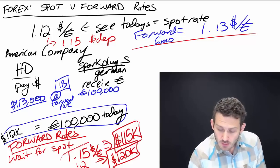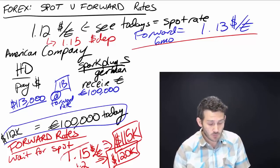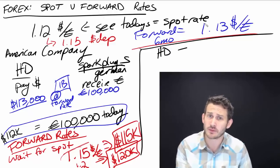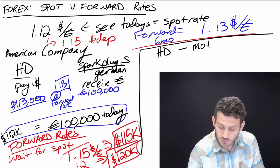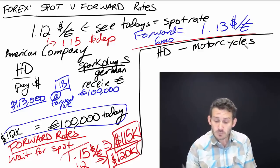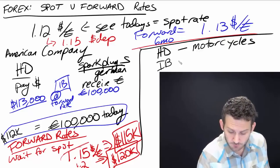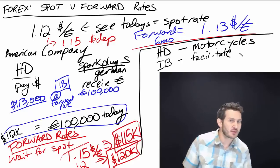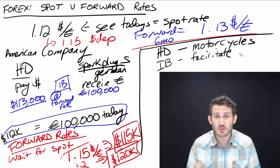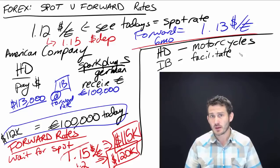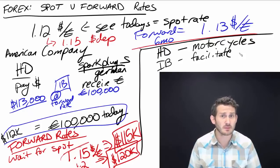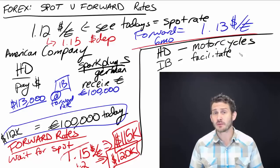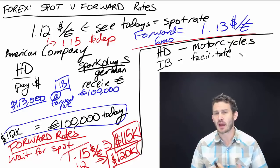Why is Harley Davidson going to enter into this forward contract? What is Harley Davidson's business? They are making motorcycles — that's what they do. An investment banker's job is to facilitate transactions. Harley Davidson is not in the market for speculating in foreign exchange markets; they are known to make motorcycles. They want to focus on making motorcycles, so when entering long-term contracts they purchase and sell at the given forward rates. The next video will show a couple of problems on how we work this out.